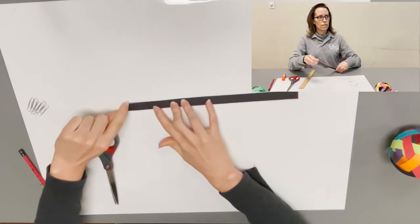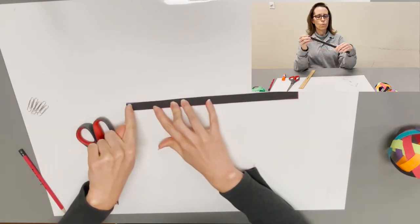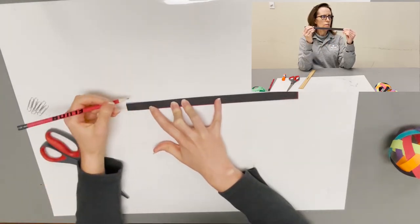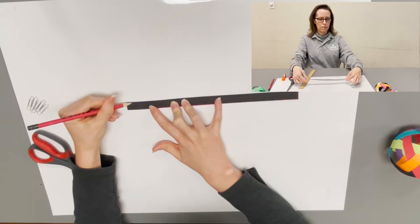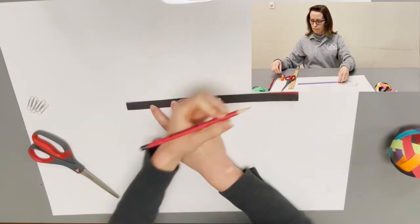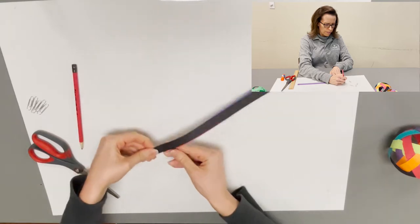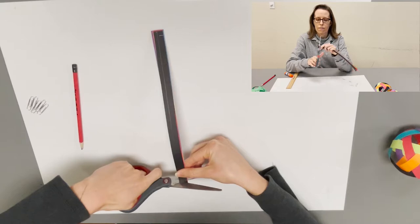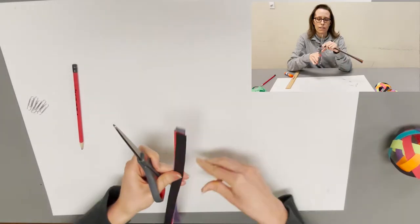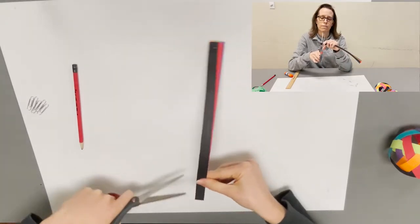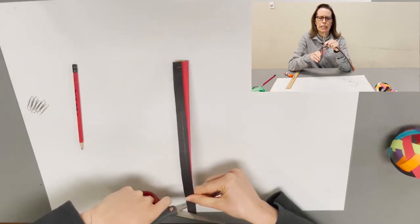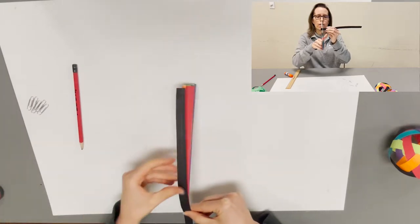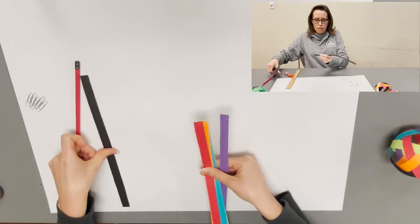We're going to cut halfway through the strips going down here on the side and coming up there from the other. Once you have those cut, spread your strips back out again.